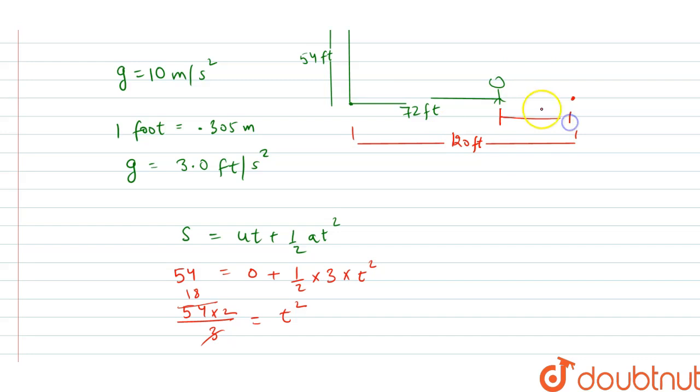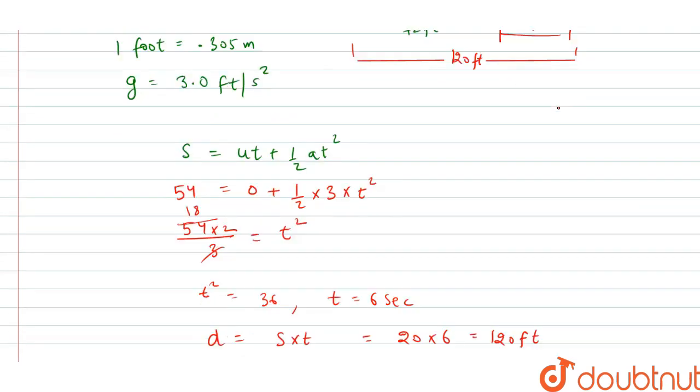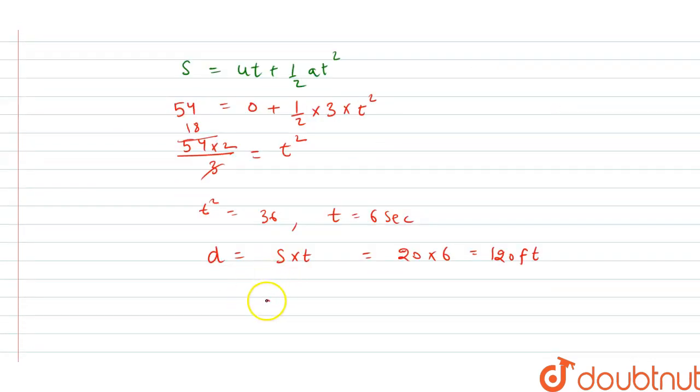This distance, let us suppose, is x. So x is equal to 120 minus 72, this is equal to